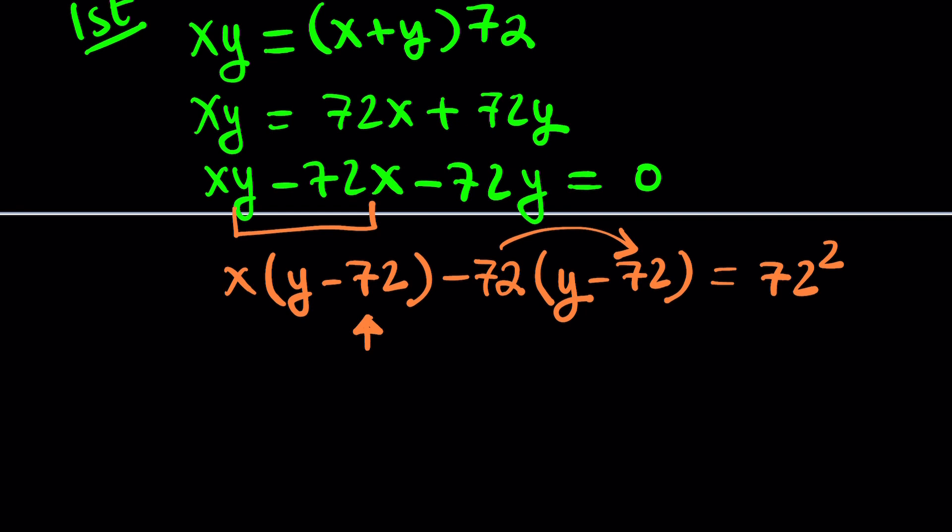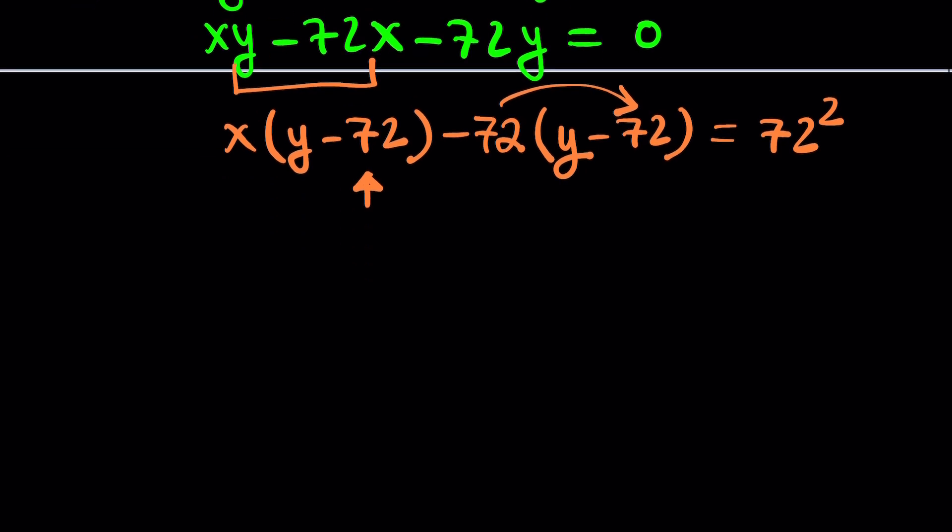Later on, we may simplify it. Now, let's go ahead and notice that we have a common factor. So we can factor it out: y minus 72 times x minus 72 equals 72 squared.